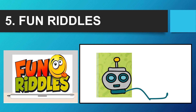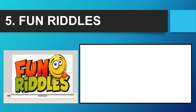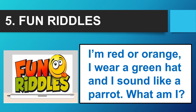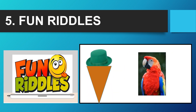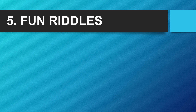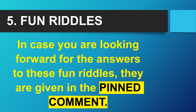'What has a tail and a head but no body?' Let's take one more: 'I am red or orange, I wear a green hat, and I sound like a parrot — what am I?' I hope you got the last one — it was easy! In case you are looking for the answers to these fun riddles, they are given in the pinned comment.